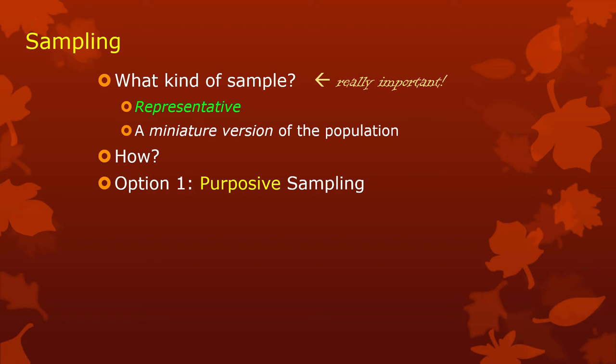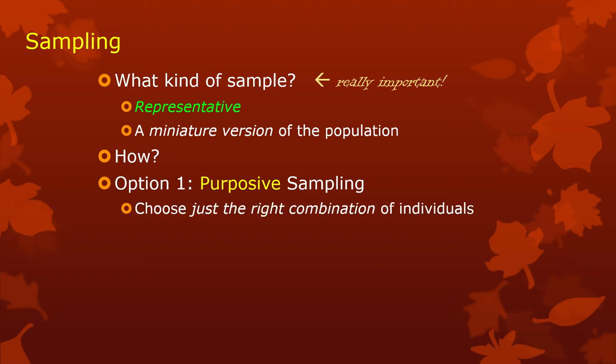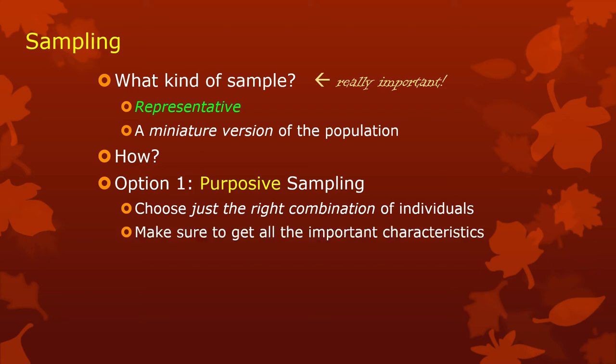Option one, which people have tried a lot in the past, is purposive sampling — sometimes called intentional or direct sampling. That is, you choose just the right combination of individuals, but you have to make sure you know and then get all the important characteristics. Statistics punishes you for ignorance. If you don't know which characteristics are important, you're going to have a problem around the time you try to publish, when somebody figures out your results are off. This is an extremely difficult thing to do — to know all the characteristics and then sample accordingly.